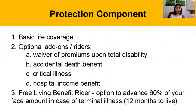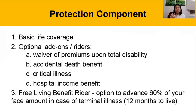A unique rider or add-on of an endowment plan is the living benefit rider. It's a free rider included in most of our traditional plans. Basically, it gives you the option to advance 60% of your face amount in case of terminal illness. In case of a 12-month prognosis, the person has the ability to convert a portion of the life insurance to cash to use for any expenses that might be incurred as a result of the terminal illness.